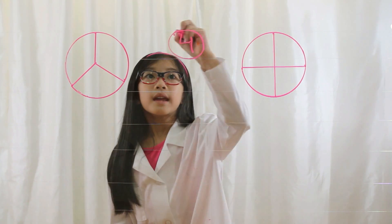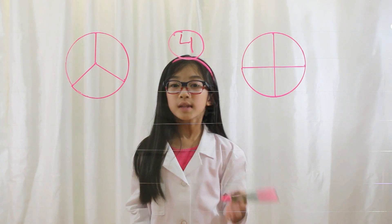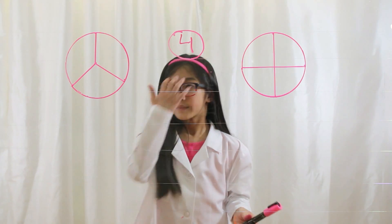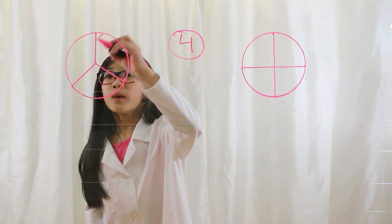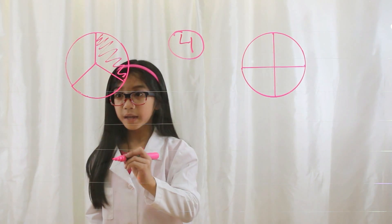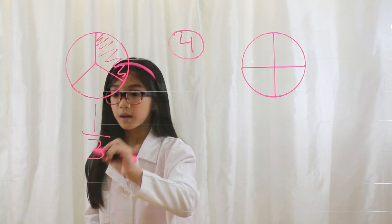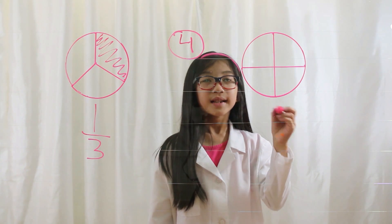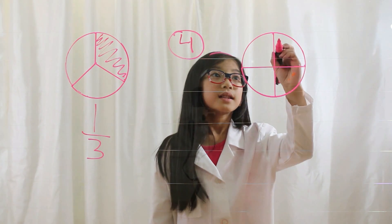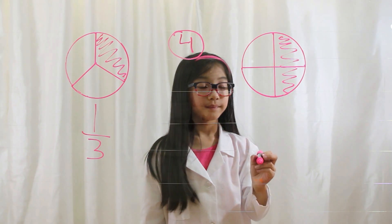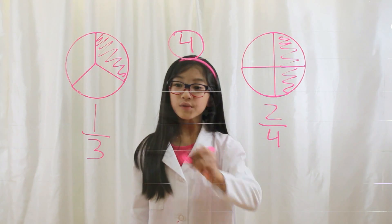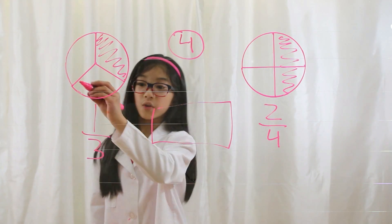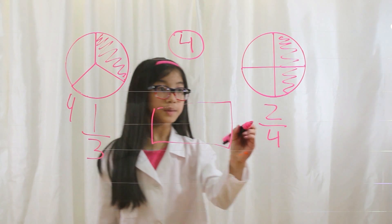Now, here's type four. Type four is when you have to cross multiply, and the numerators and the denominators are different. Let's say that John went to a birthday party and he ate one-third of the cake — that would be one out of three. Let's say that Sarah was also at the party and she ate two pieces of the pie — that would be two-fourths. Now, all you have to do is cross multiply. Four times one is four. Three times two is six.